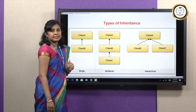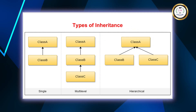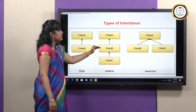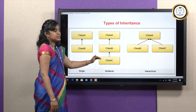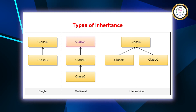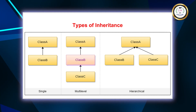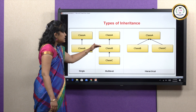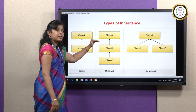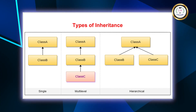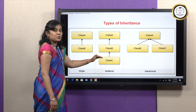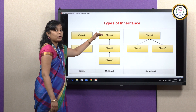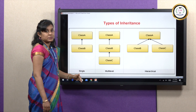In multi-level inheritance, we have the same setup as single inheritance but the levels continue. At each level you inherit the properties of the previous class. Class A is the Superclass; Class B inherits the properties of Class A, so Class B has Class A's property as well as its own. Class C inherits from Class B, which means Class C will have the properties of Class A and Class B as well as its own property.